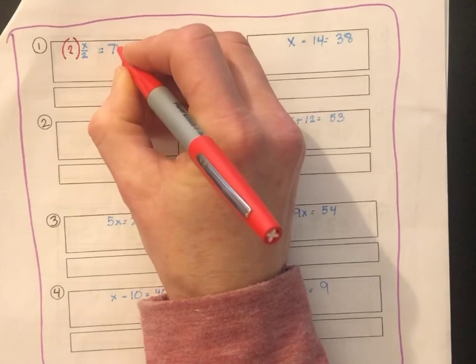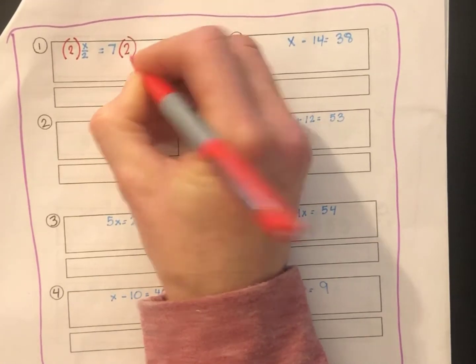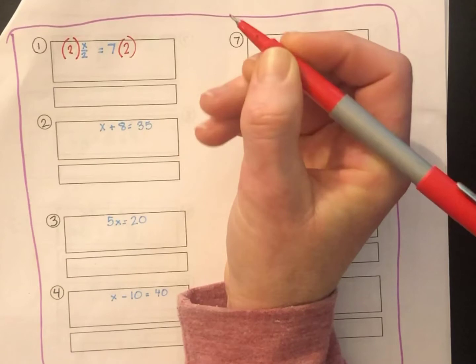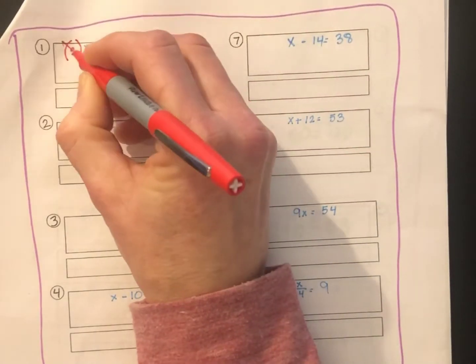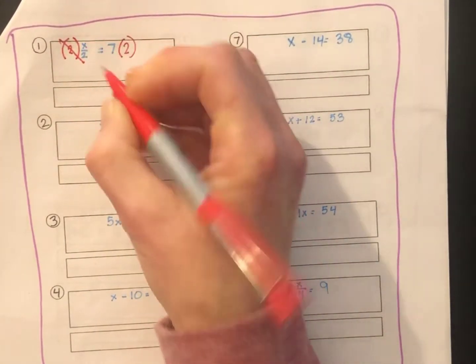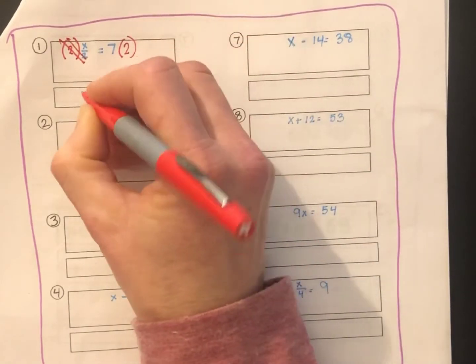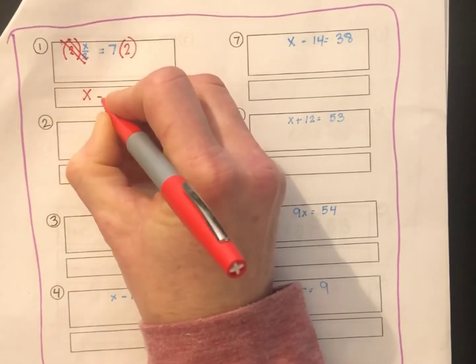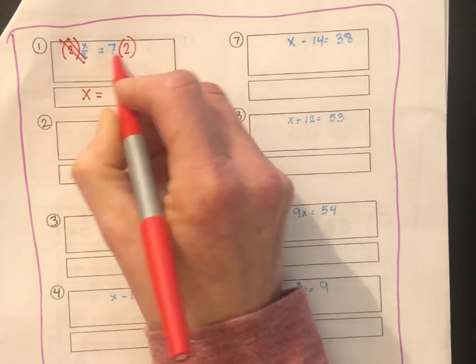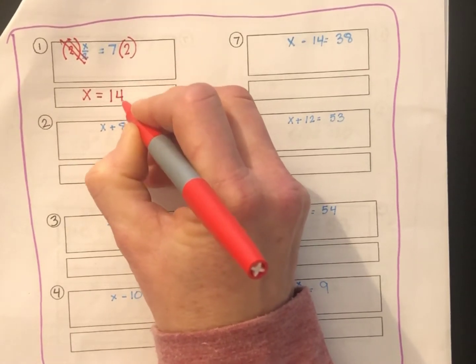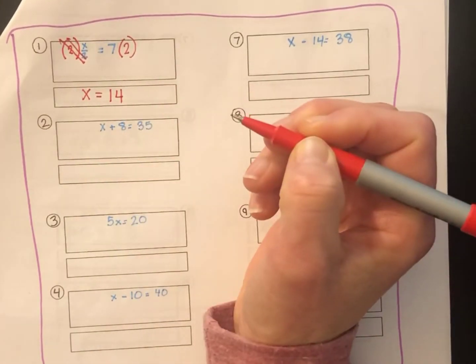What we do to one side, we do to the other. So if we multiply this by 2, then we'll multiply the other side by 2. x divided by 2 times 2 cancels out the 2, so you're left with x equals 7 times 2 is 14. And if you go back and substitute the x for 14, you'll have 14 divided by 2 equals 7. So you know your answer's correct.